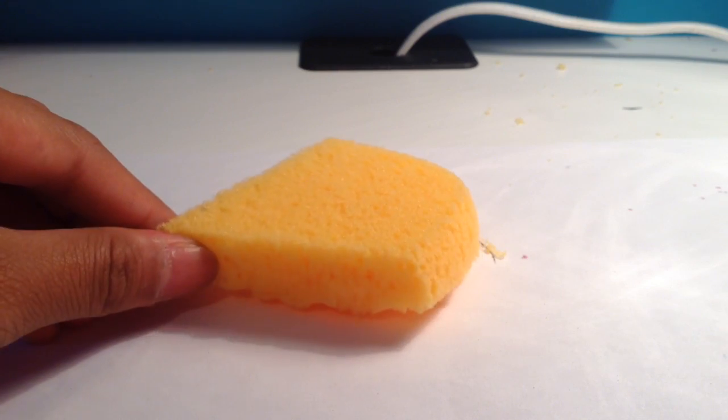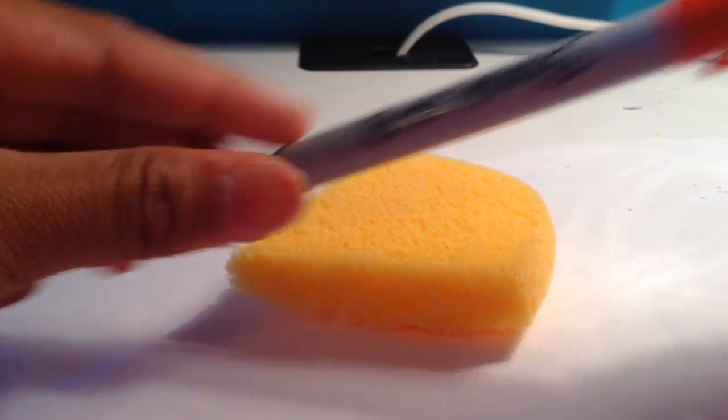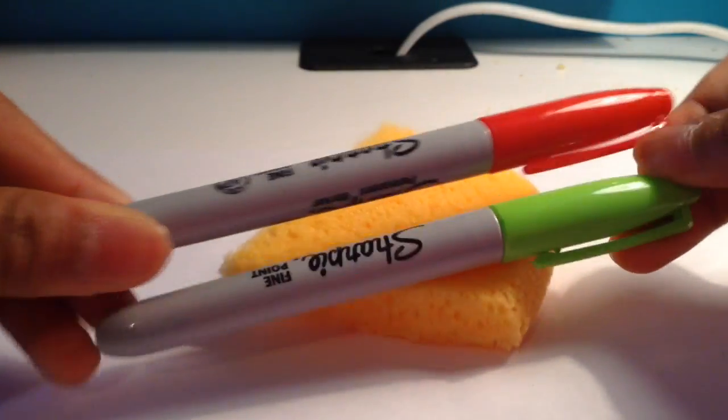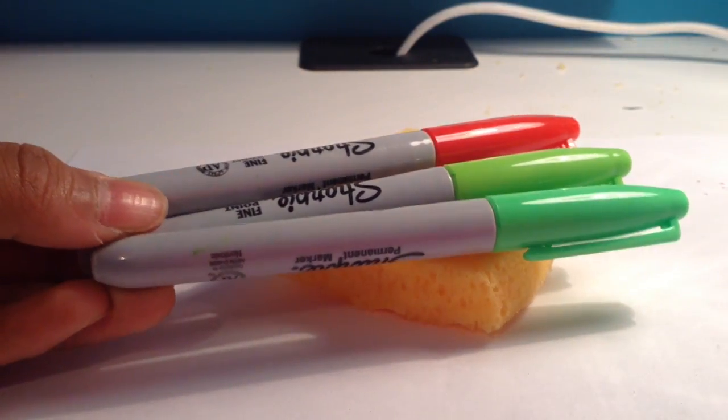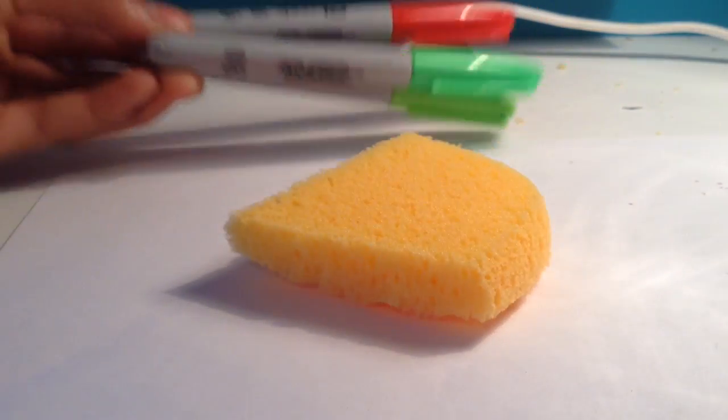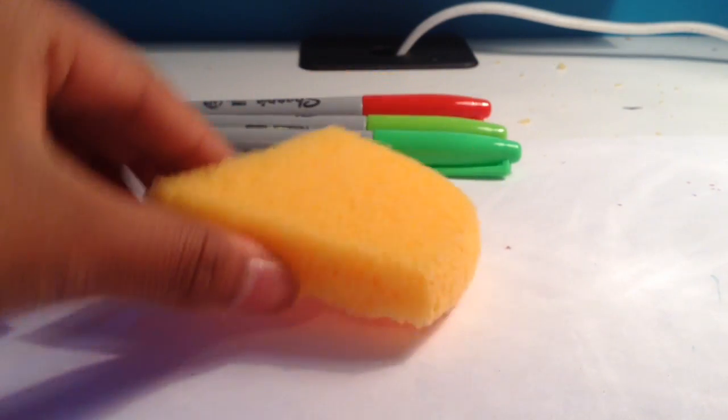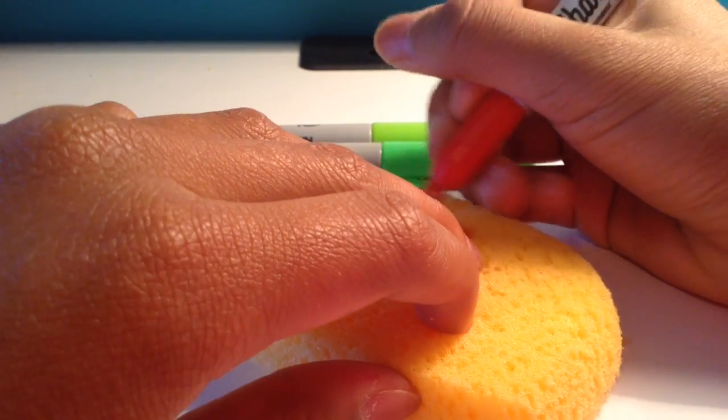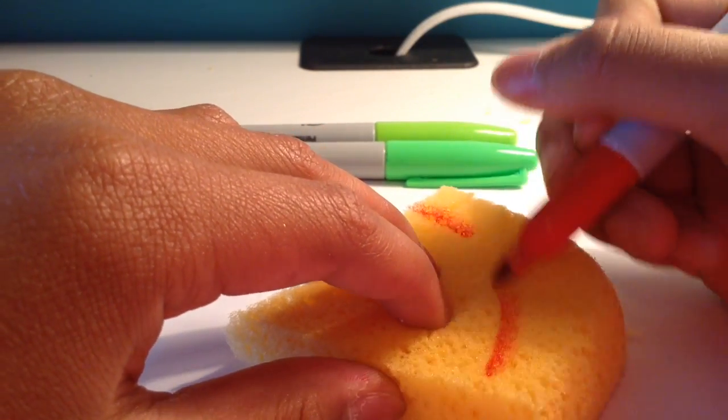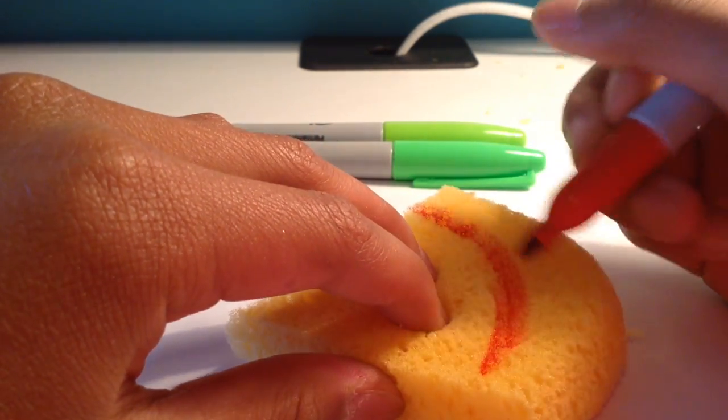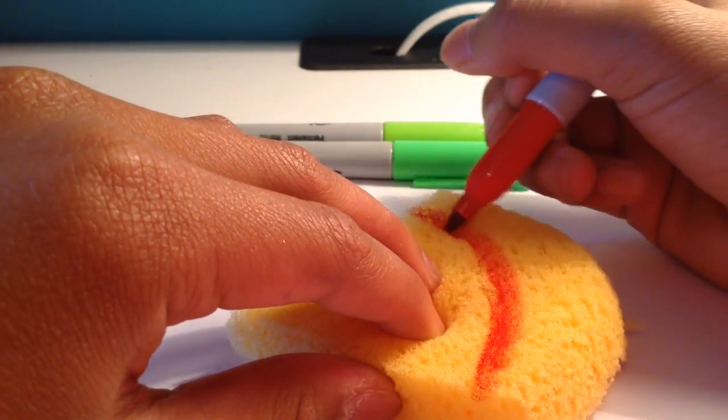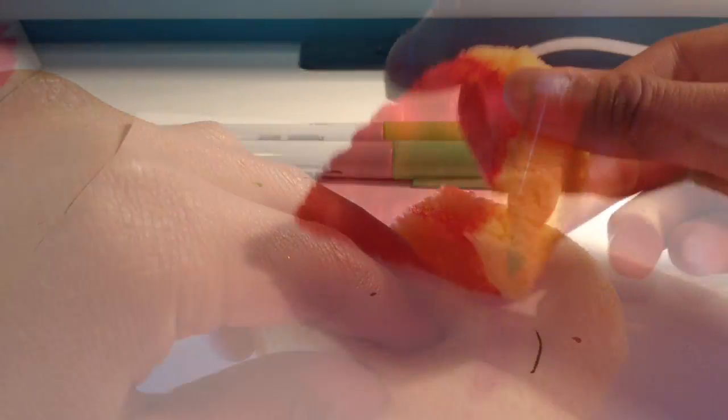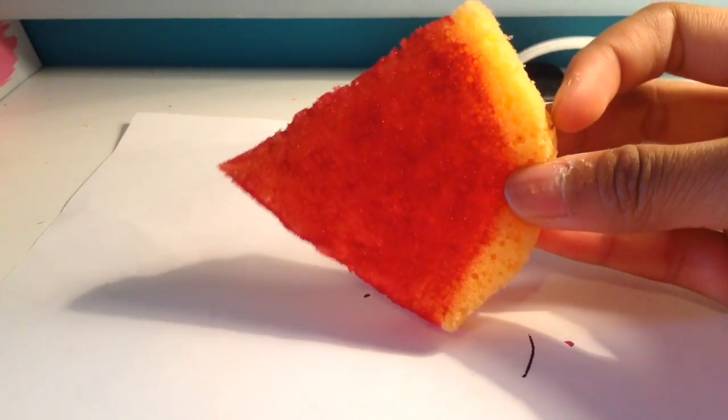And then I'm going to use some sharpies or markers. I don't have any puffy paint, so I'm just using this. You can use whatever colors you'd like to draw in your watermelon, like maybe a lighter red or darker green. But next, I'm just going to take this red sharpie and outline where I want the red to be.